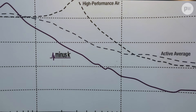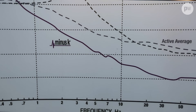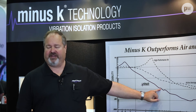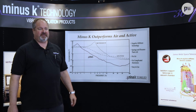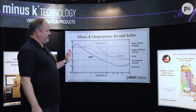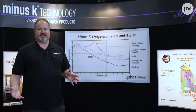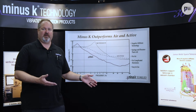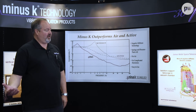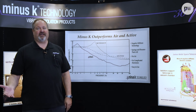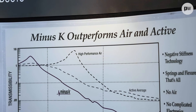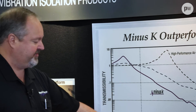Once you get down to about five hertz or so, we're down minus 40 dB, or about a factor of 100. That really allows us to provide way better performance and solve problems that other people simply cannot. If our isolators can't solve the problem, you're kind of out of luck, especially for low-frequency building vibrations — if you're having a problem at one, two, or three hertz.